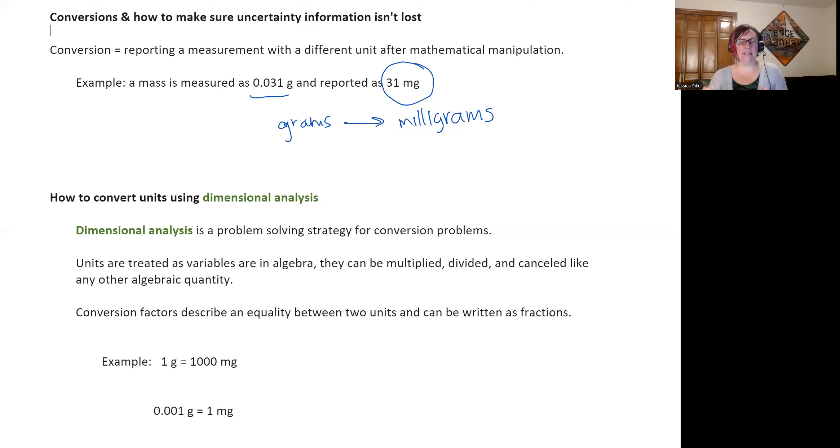The conversion factor is the number that will convert a value from grams into milligrams or liters into deciliters, right? There's a ton of these or inches into feet. So in dimensional analysis, units are going to be treated as if they're variables. So that way they can be algebraically manipulated. So they can be multiplied, divided, and canceled, just like a variable is in algebra.